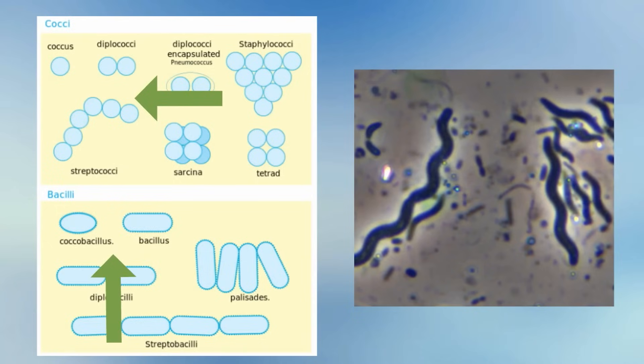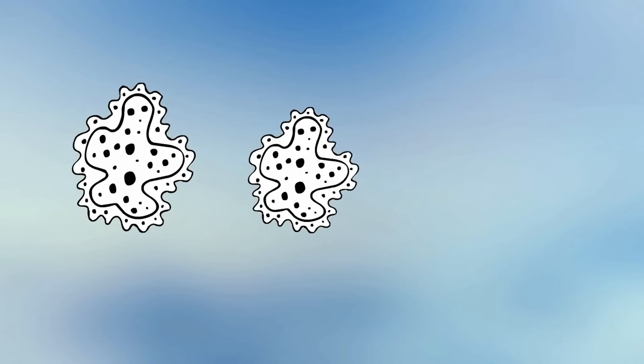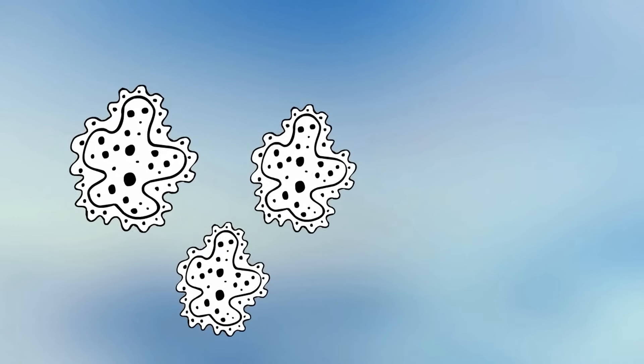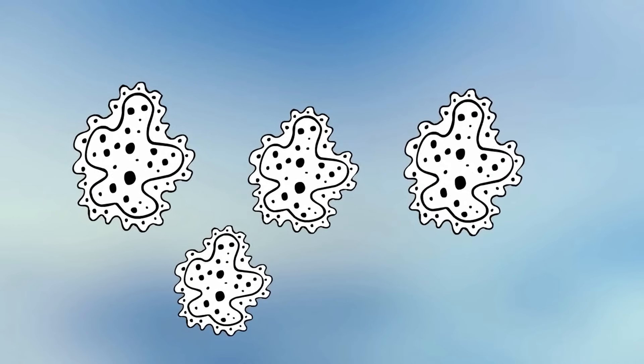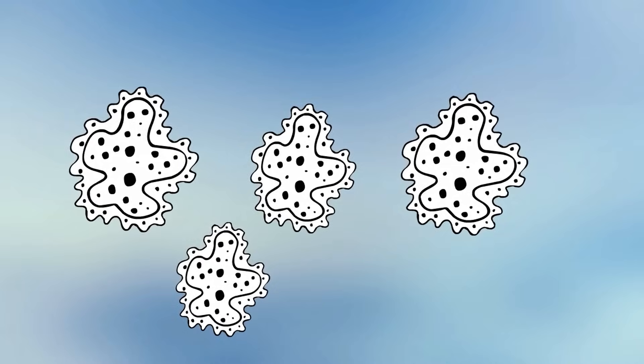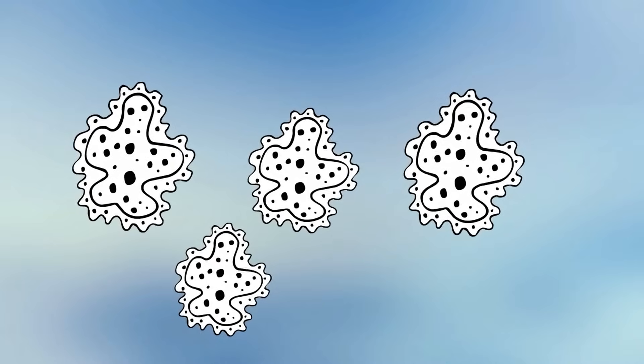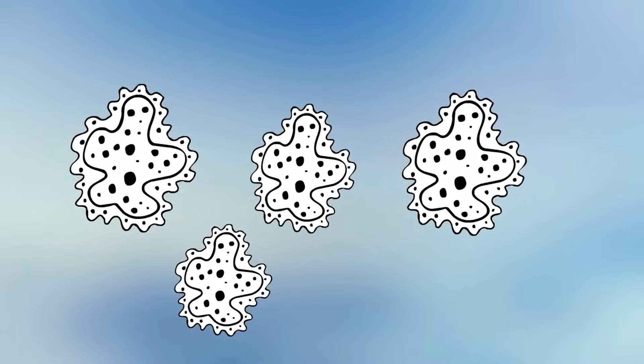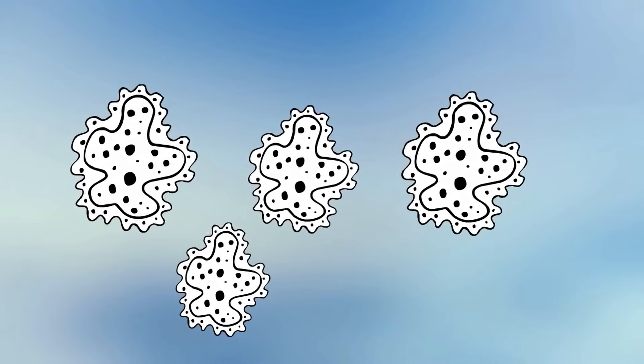Most members of the Monera kingdom reproduce asexually in a process called binary fission, but some reproduce sexually in a process called conjugation.